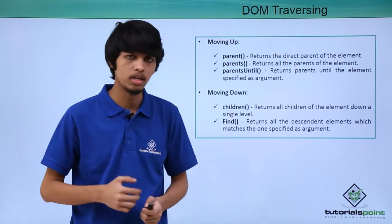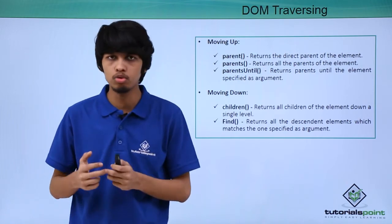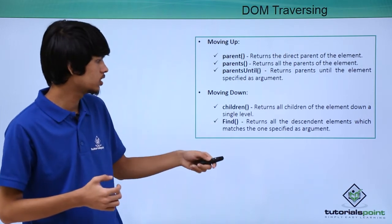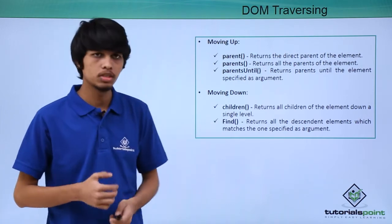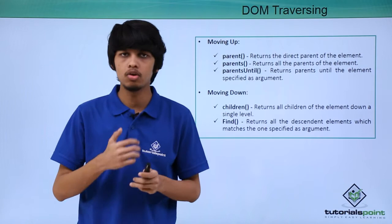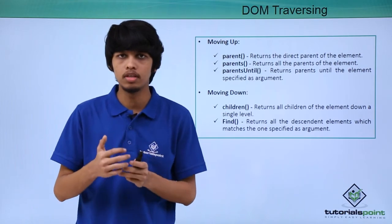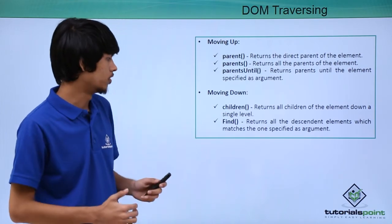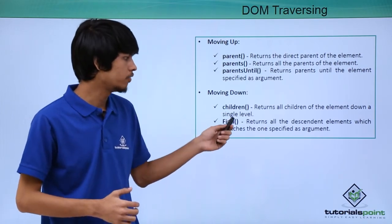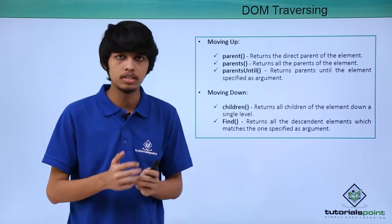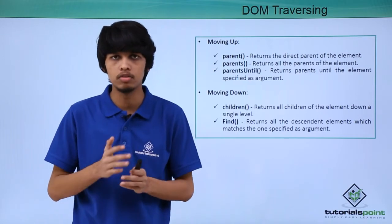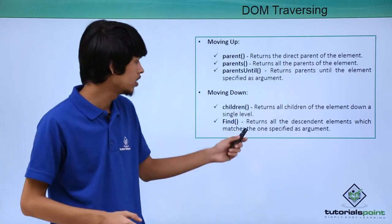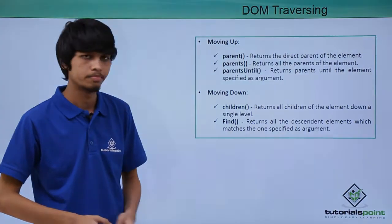Next is moving down. We have two methods: children and find. Using children, we can return all the children of the element up to a single level. Using find, we can return all descendant elements which match the element passed as an argument inside find.